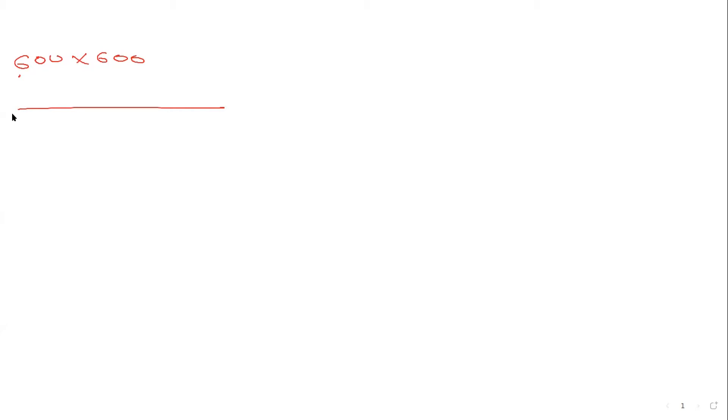Suppose an image has a resolution of 600 by 600. That means it is a matrix — 600 pixels wide and 600 pixels tall. It's a matrix concept. For our example, suppose I have an image of 5 by 5.